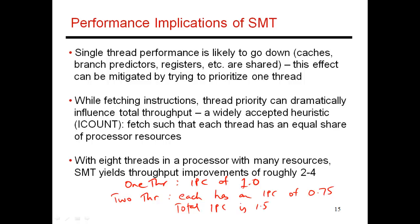Before, in any given cycle, only one out of the four functional units were being kept busy. Now in any given cycle, out of the four units, 1.5 of them are being kept busy. So overall throughput and utilization has gone up, and my underutilization has gone down. This is why I'm doing simultaneous multithreading — to maximize my overall throughput.